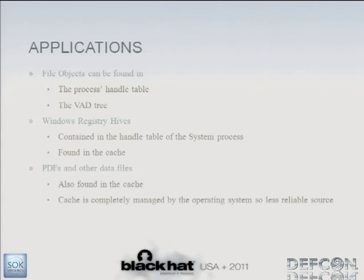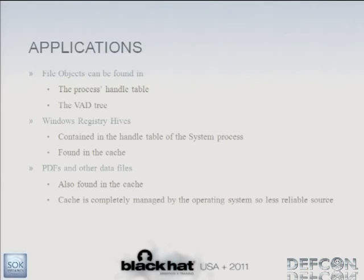PDFs are found in the cache. We haven't had tons of time to research everything available from the cache. On a Windows XP system, you can get restore points because there's a handle to a file keeping restore point data, so you can see what was installed after an attack. The caveat for the cache is that it's hit or miss — you may or may not find what you're looking for.